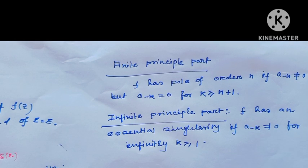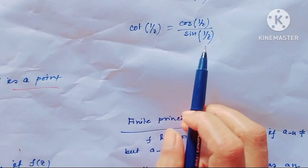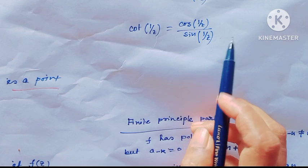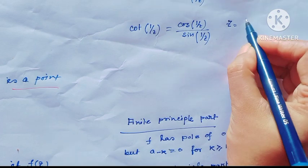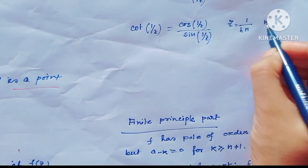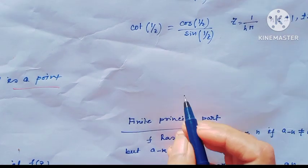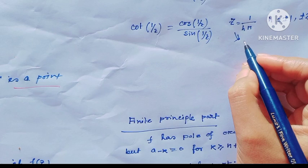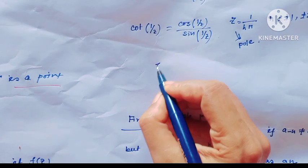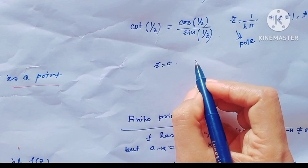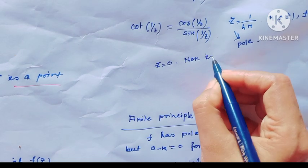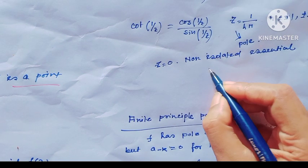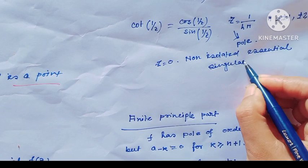Consider cot(1/z) = cos(1/z)/sin(1/z). This function has singularities when z = 1/(nπ), where n = ±1, ±2, ±3, …. These singularities are poles. But when z = 0, cot(1/z) has a non-isolated essential singularity.